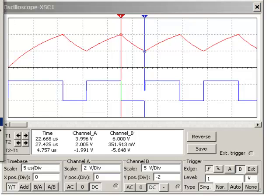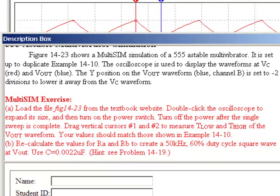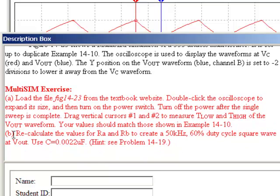Now let's see what other exercises I'm going to ask you to do. So if you go to view description box, besides running the program as is, we're going to recalculate in step B. We'll be asked to recalculate the values for RA and RB to create a 50 kHz 60% duty cycle square wave. So go through those calculations using a capacitor 0.0022. And a good hint would be to look at problem 14-19 at the end of the book. It gives you a clue on how to solve that. So make sure you try that and run it and see if the oscilloscope gives you the results you expect.